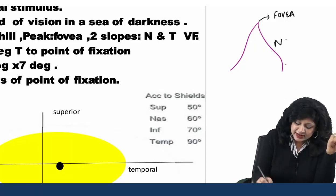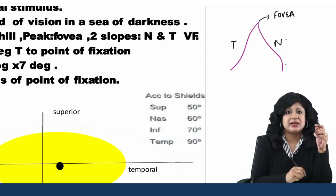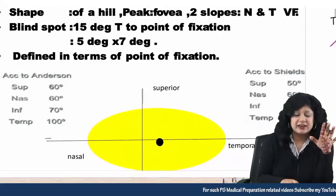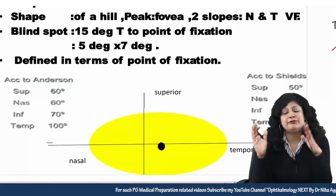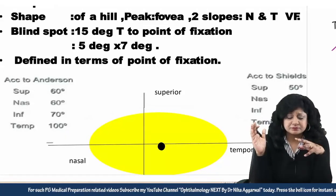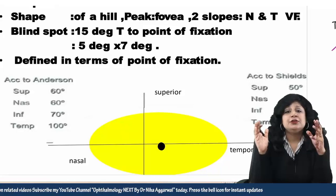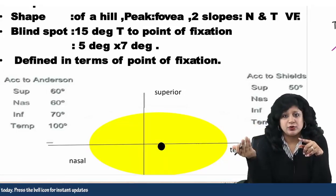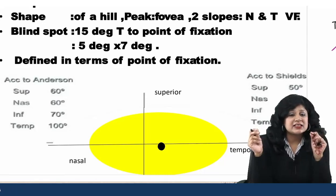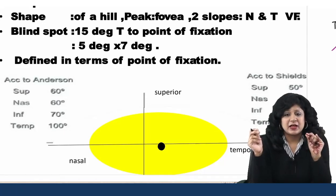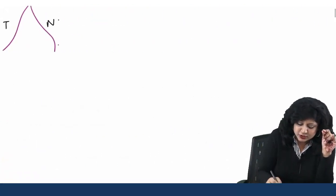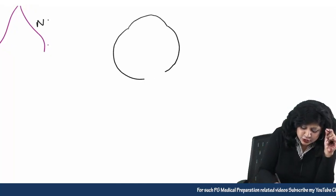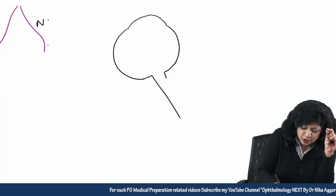One slope will be your nasal side and one will be your temporal side. Then we come to the blind spot. Whenever we are talking about the visual field, the blind spot is always there, and you know that this blind spot is actually corresponding to the optic disc. Now the optic disc is lying in the nasal retina. I hope you are already aware of this concept.